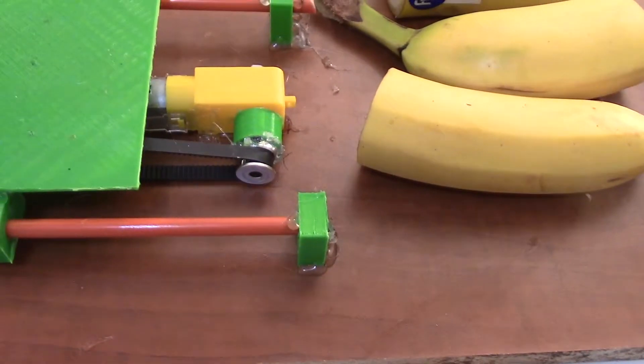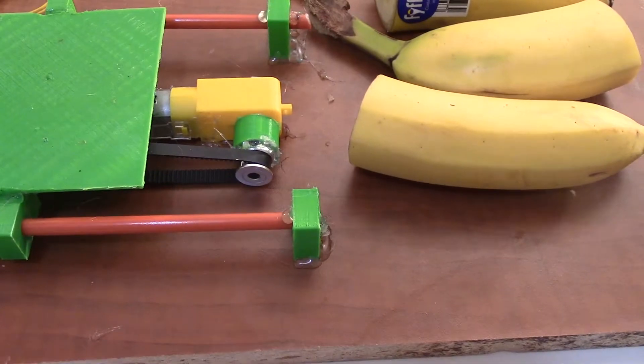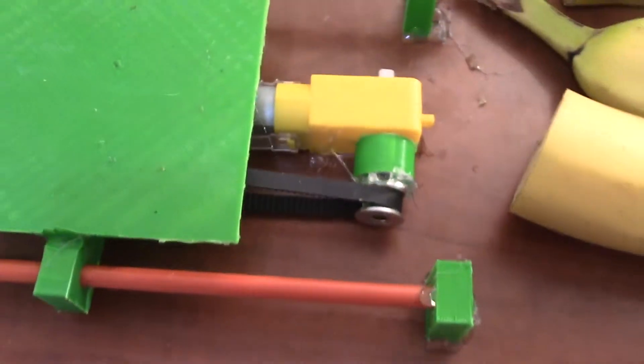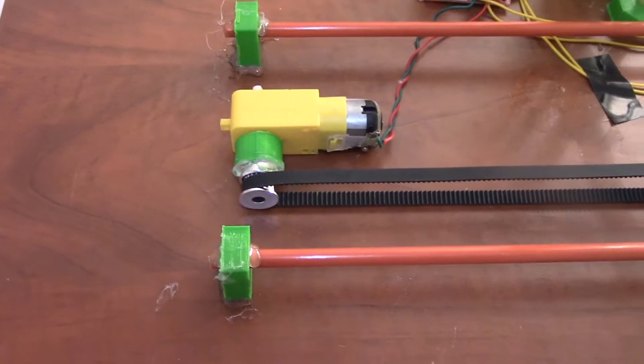There's a timing belt and these two silver pulleys. Now these two silver pulleys are meant for stepper motors, so I had to 3D print a little holder thing which is connected on the spinning part of the motor. That just holds the gear to the motor.